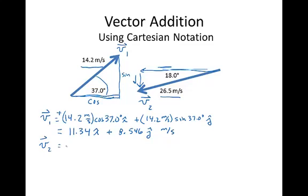So here we would have a negative 26.5 meters per second times the cosine of 18 degrees. You could also have 26.5 meters per second times the cosine of 198 degrees coming all the way from the positive X axis to the vector.